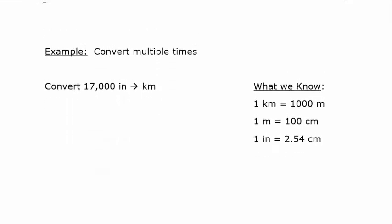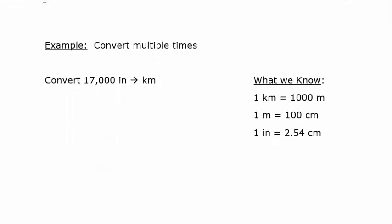Sometimes one conversion isn't enough — you have to do more than one. For example, let's convert 17,000 inches into kilometers. We don't know the direct conversion from inches to kilometers, but we do know related conversions: a kilometer is 1,000 meters, a meter is 100 centimeters, and we know the conversion from an inch to a centimeter.